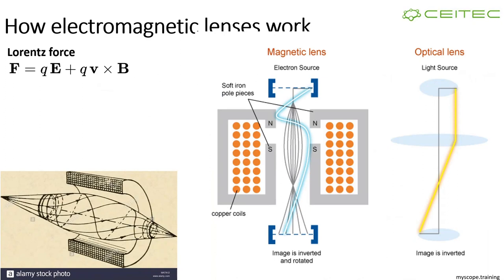Now we know roughly how optics work in an optical microscope. This is very similar for the electron microscope, except that electron microscopes do not have optical lenses — they work with electromagnetic lenses. This is because electrons can be affected by electric and magnetic fields. What we do is take a coil, and the coil generates the electromagnetic field that acts as the lens.